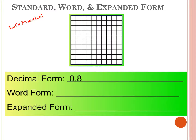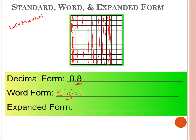Let's look at it in a model. This decimal has an 8 in the tenths place, meaning I have 8 tenths. Each small box is a hundredth, but 10 of them equal one tenth, so one entire column is a tenth. We shade one, two, three, four, five, six, seven, eight tenths. In word form we say eight tenths. In expanded notation there would be an 8 in the tenths place, or eight times one-tenth — eight groups of one-tenth.